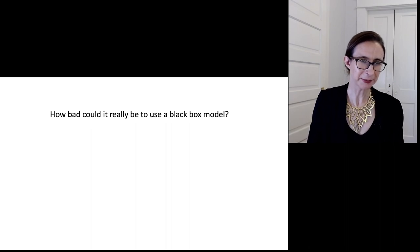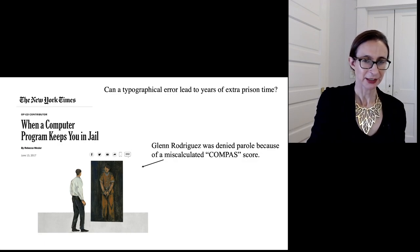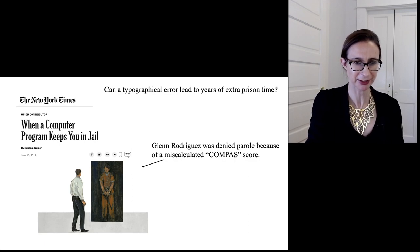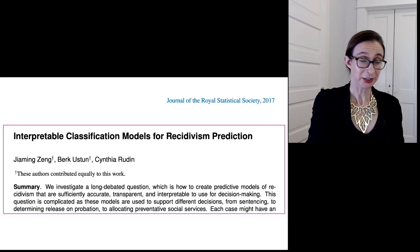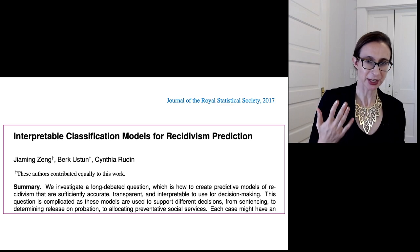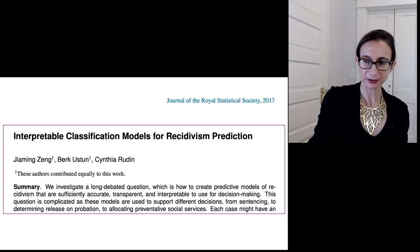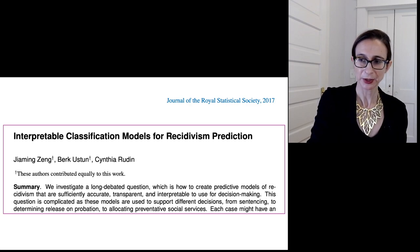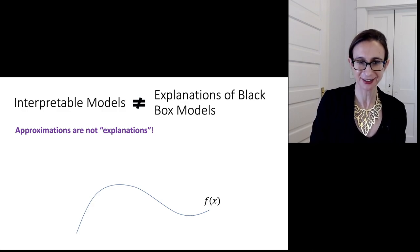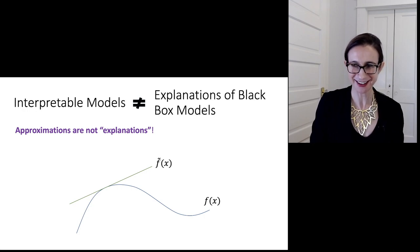How bad could it really be to use a black box model? Going back to criminal recidivism prediction and the COMPASS score: we've already seen that typographical errors can cause problems with COMPASS scores, and that the COMPASS model doesn't seem to be more accurate than interpretable models. I wrote a whole paper in 2017 saying that interpretable classification models are just as accurate as black box models — which basically means there's not really any need to use a black box model.